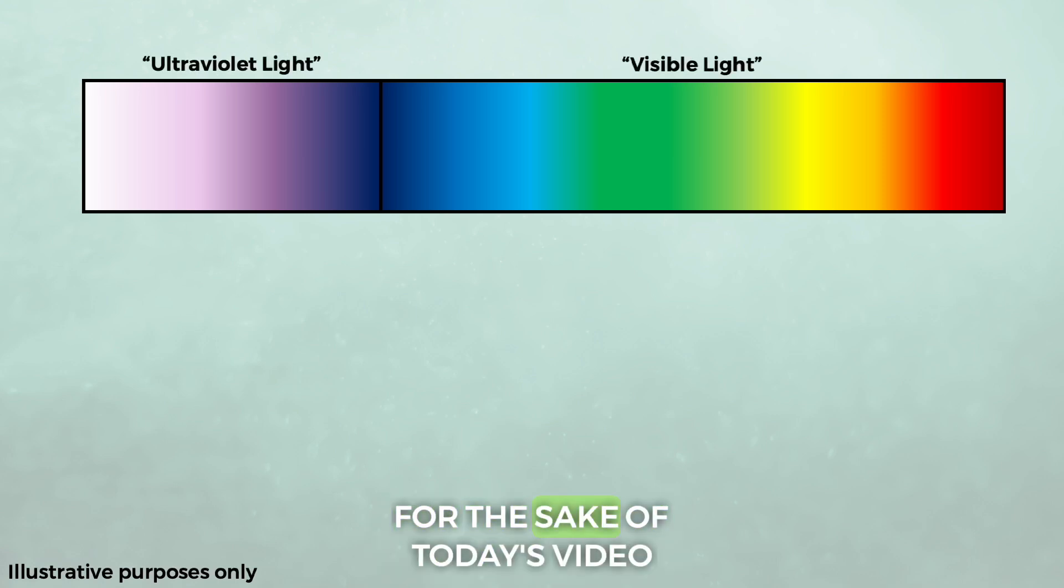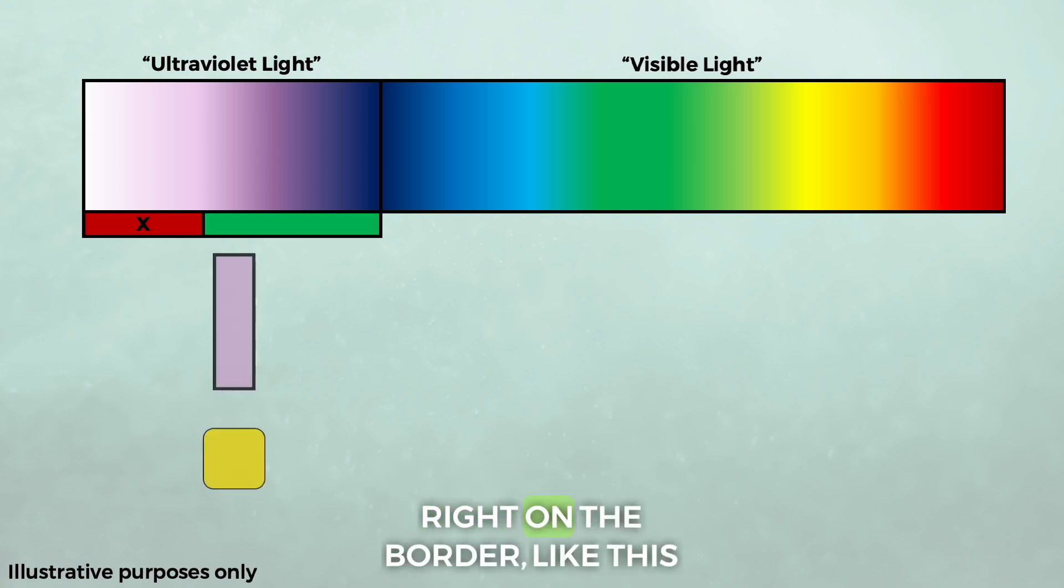Ultraviolet light can, for the sake of today's video, be categorized into two: dangerous ultraviolet and safe ultraviolet. And for a multitude of reasons, the types of UV diodes that we use for animals and vitamin D sit right on the border, like this. But of course, we know diodes don't actually output a single peak like this. They output a range.